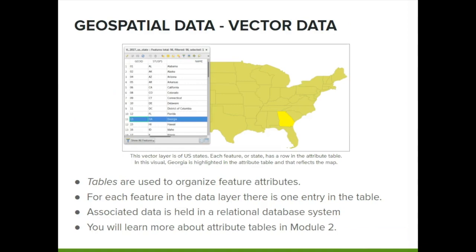Vector layers are supported by attribute tables — think of them like geospatial spreadsheets. The example on the screen shows a vector layer of the United States. Each state represents a feature within the vector layer and is represented as a row within the attribute table. Additional data, such as population, can be added for each state in the columns. These attributes will allow you to create thematic maps — for example, you might design a map showing population density across the United States. You will learn more about attribute tables in Module 2.